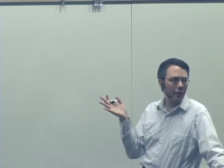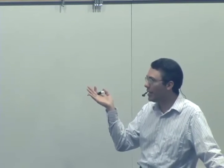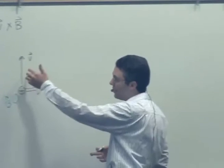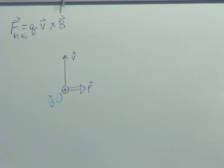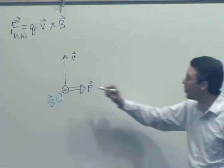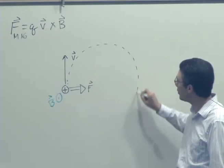So will the speed ever change? No. If the force is perpendicular, if there's no component of the force in the direction or opposite direction of the velocity, the speed stays constant. But what changes? Direction. So we get circular motion. We saw a couple examples last time of circular motion.